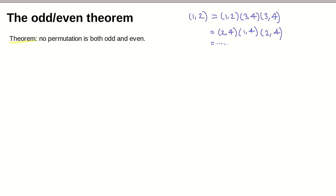This theorem, which is written here, is very much not an obvious theorem. It says that no permutation is both odd and even — so you can't write (1 2) as a product of an even number of transpositions, and you can't write the 3-cycle (1 2 3) as a product of an odd number of transpositions. I'm not going to give a proof of this here; it's the kind of proof where it's more helpful to sit and work through it at your own pace than to listen to it read aloud. If you'd like to see a proof, you can find one in the typed notes, where there is a careful outline of a proof that no permutation is both odd and even.